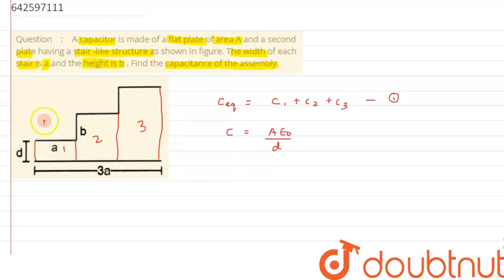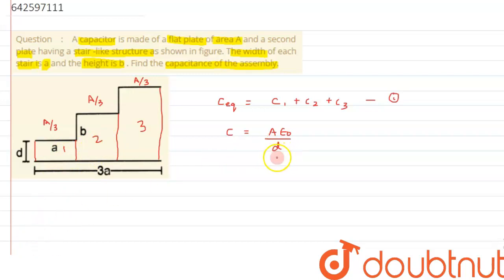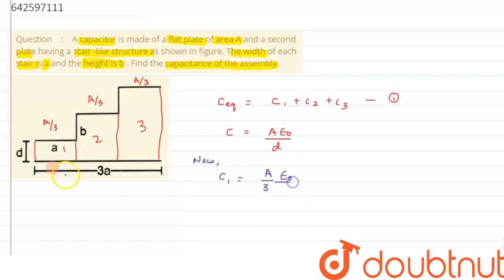The area of each plate section is A/3, since the total plate has three equal stair sections each of width a, giving equal areas A/3. For C1, the separation between the two plates is d only, so C1 = (A/3)ε₀ / d.